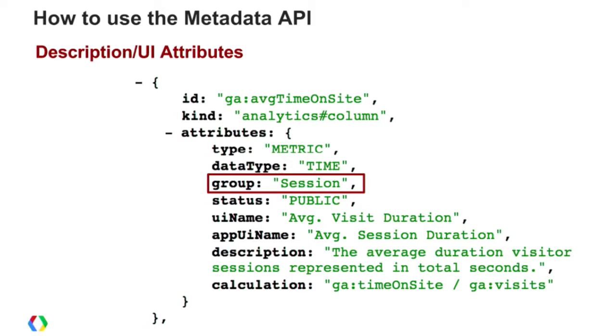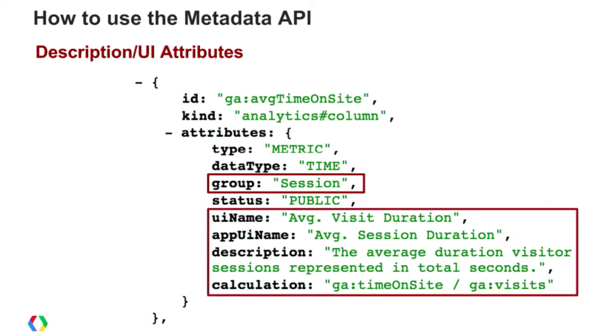Next, we provide description or UI attributes. We have groupings available — the Google Analytics team has grouped dimensions and metrics into similar groupings that are helpful when you're building a UI. Every dimension and metric will have this group attribute. We also have the UI name and the app UI name, because depending on whether you have a web property or an app property, certain dimensions and metrics have different names. So you want to check the response to see if that app UI name attribute exists and use it accordingly.